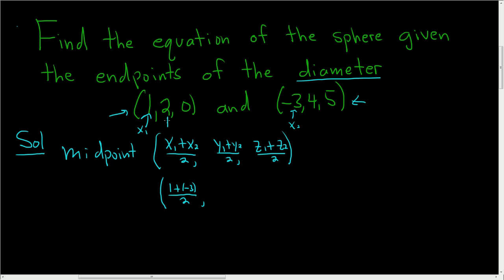Then you do the same thing with the y coordinates. So 2 plus 4 and you divide by 2, and then you add the z coordinates. So 0 plus 5 and you divide by 2.